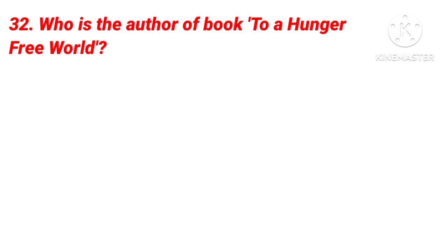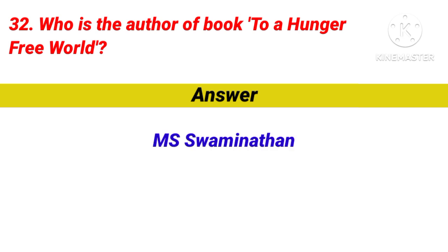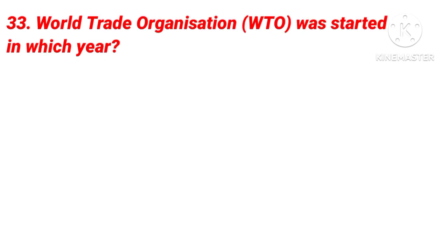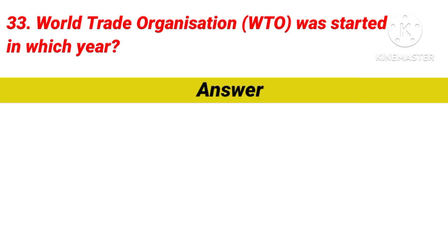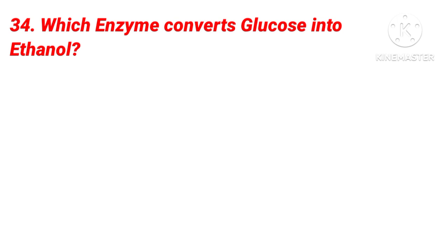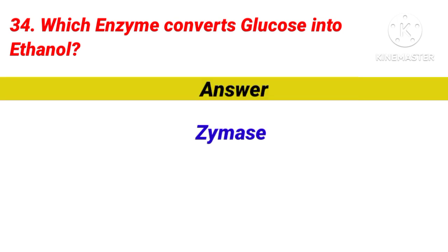Question 32: Who is the author of the book 'To a Hunger-Free World'? Answer is M.S. Swaminathan. Question 33: The World Trade Organization (WTO) was started in which year? Answer is 1995. Question 34: Which enzyme converts glucose into ethanol? Answer is Zymase.